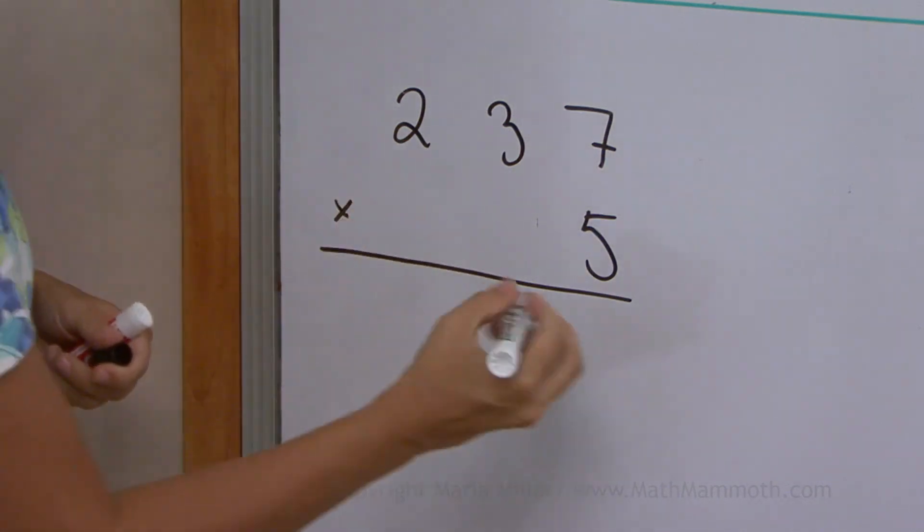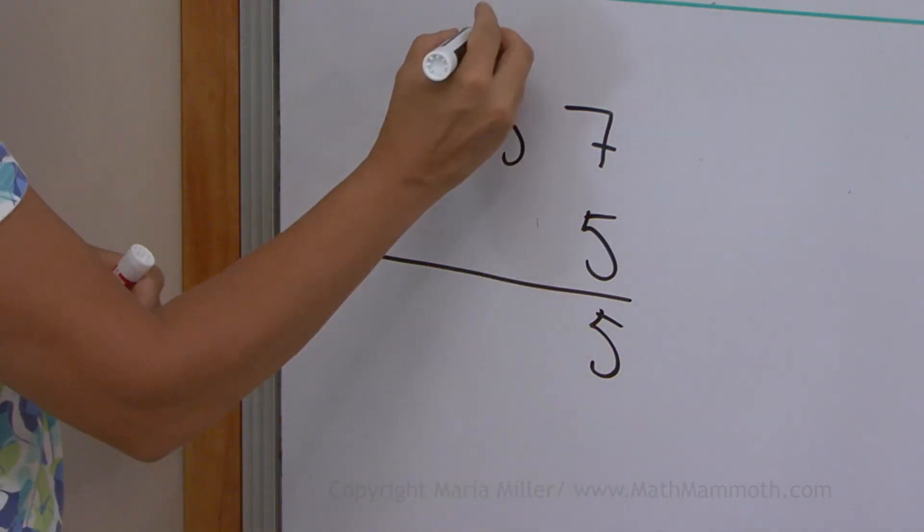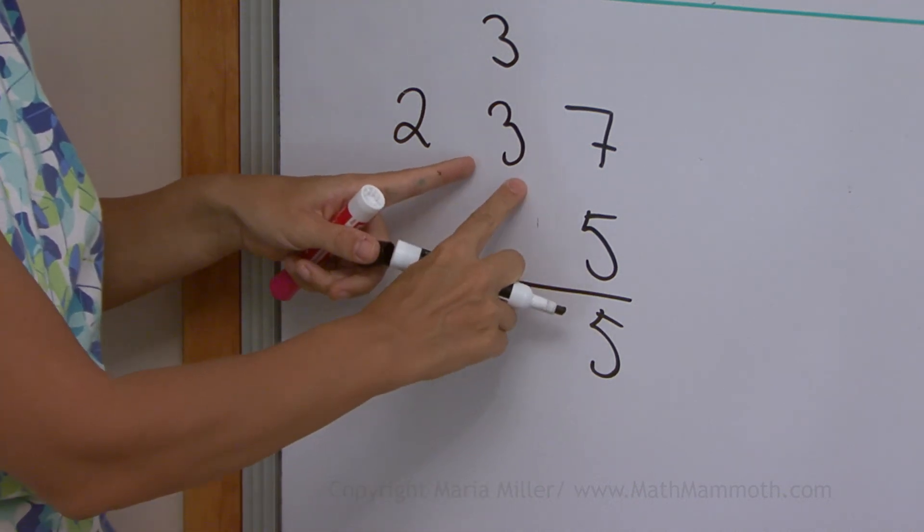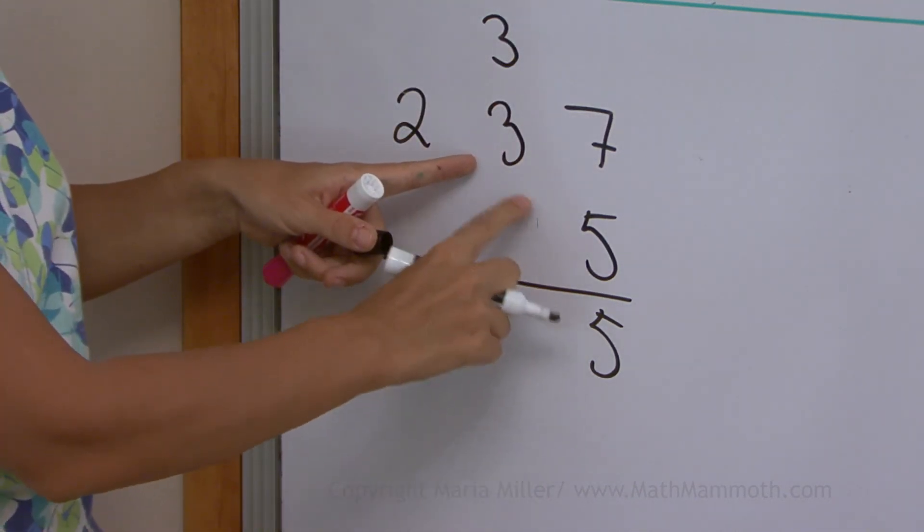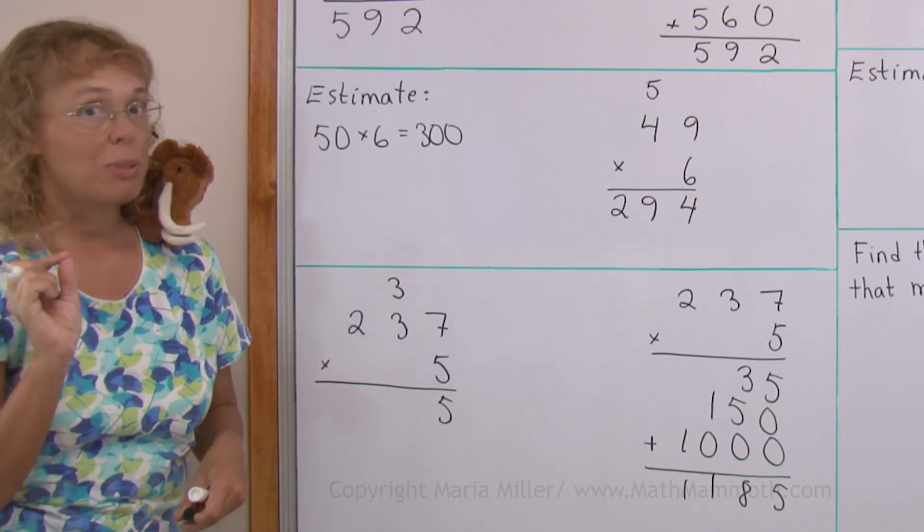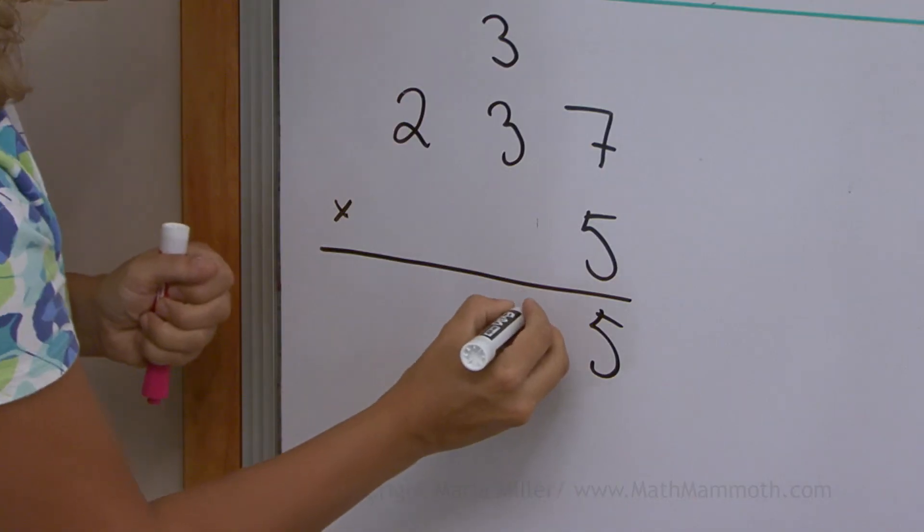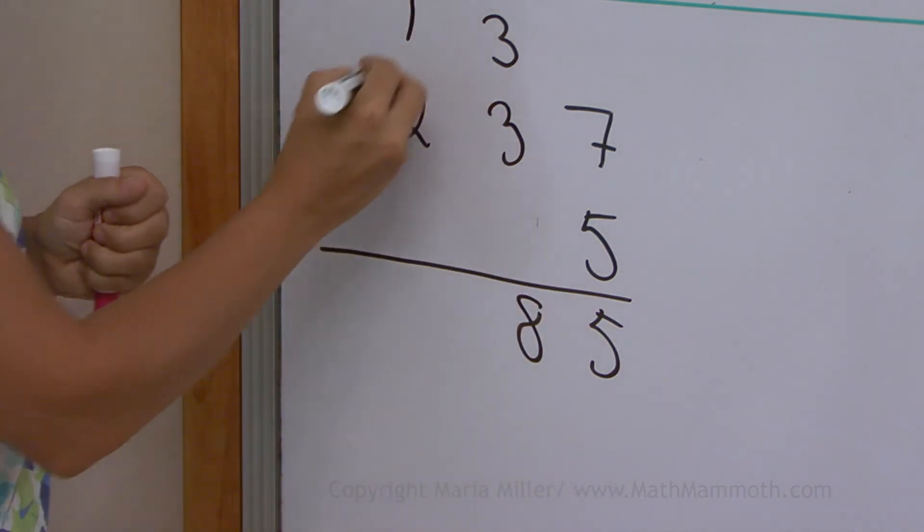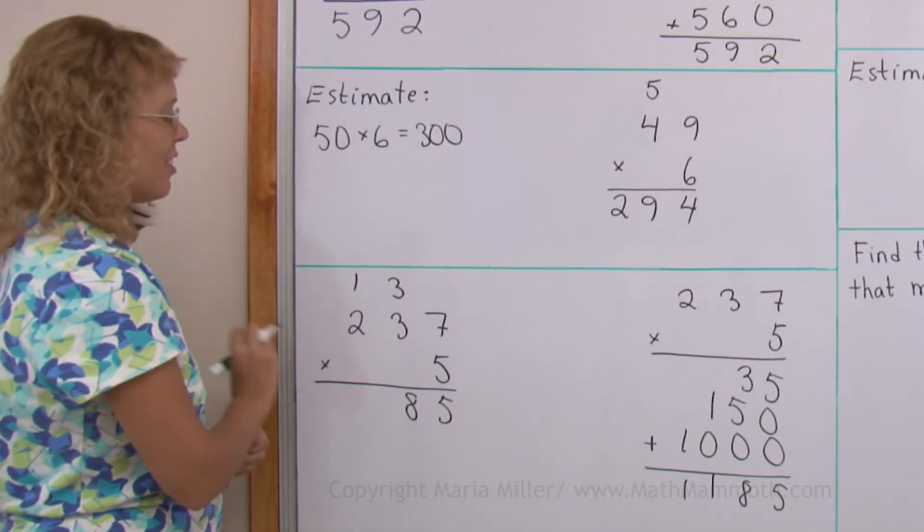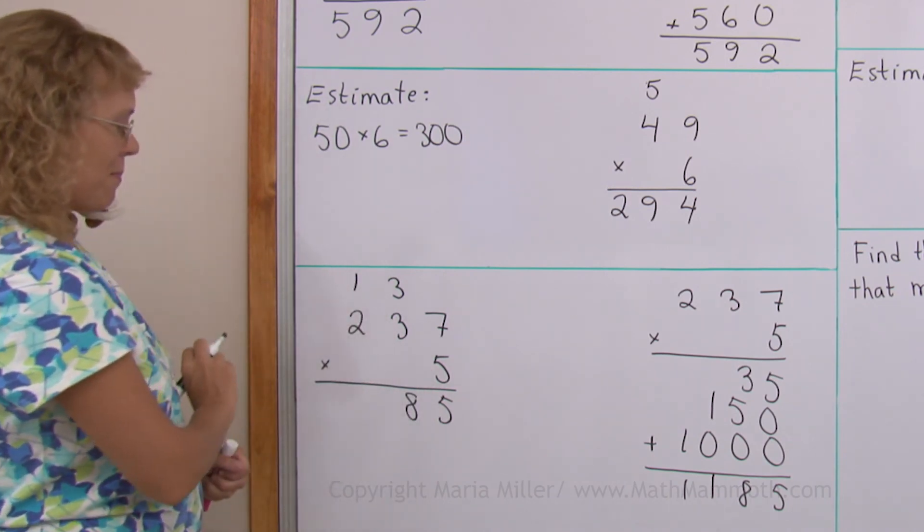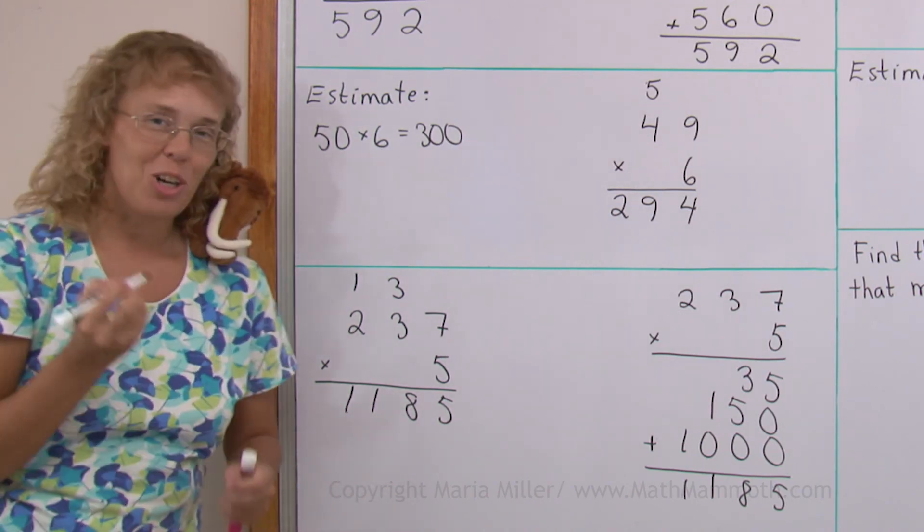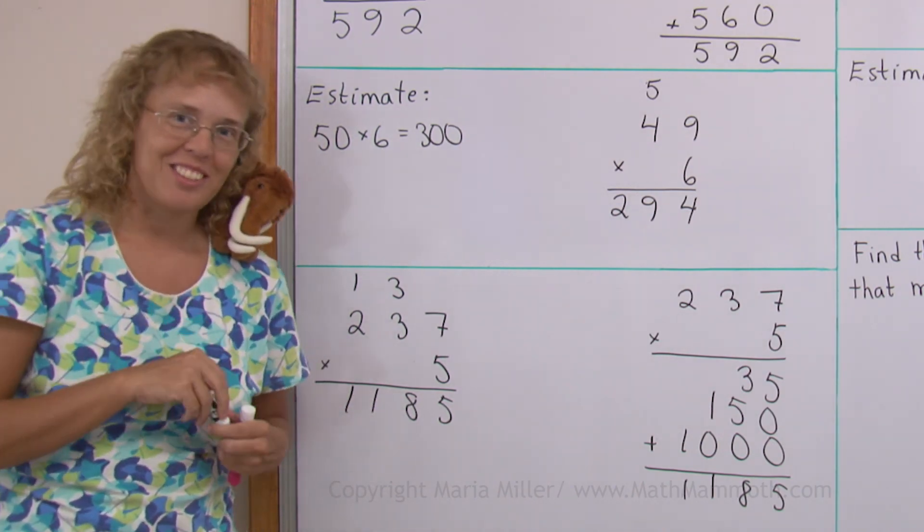5 times 7, 35. And the three tens are regrouped. And then the tens, 5 times 3, plus 3. So that's 15 plus 3, that's 18. And we need to regroup again. The 18, only 8 gets written here. The 1 is regrouped with the hundreds. And then the hundreds, 5 times 2, plus 1. So we get 10 plus 1, that's 11. I hope you followed me. It is not difficult.